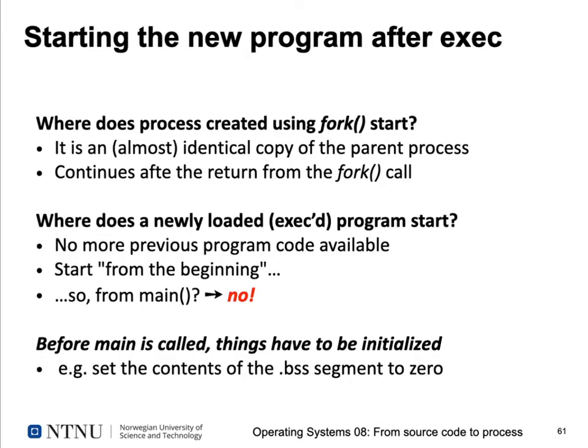When a new program starts after exec, the question is: where does it start? With fork, we have an almost identical copy of the parent and both continue after the fork return. But with exec, the previous program code is gone, so we must start from the beginning. You might think the first instruction executed in a C program is the first instruction in main — but that's just the first instruction you see. As we've seen, main is called only after a number of things are initialized, including setting BSS segment contents to zero, as the compiler assumes for globally declared variables in BSS.